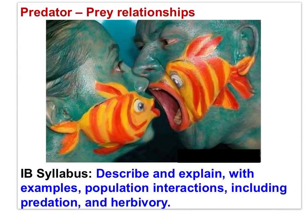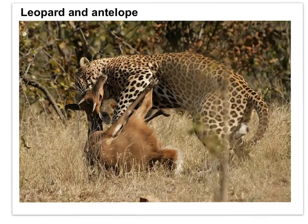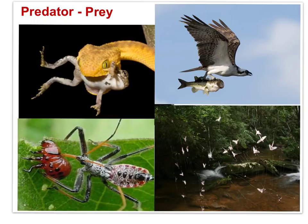Now let's move on to predator-prey relationships. In these photographs, we can see classic examples of predator-prey relationships. Keep in mind that the predator has an impact on the size of the prey population, and the availability of prey influences the size of the predator population. The presence of one species is important in holding the population of the other species around carrying capacity.